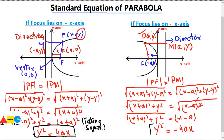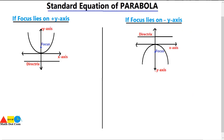This is the standard form of the equation of parabola when the focus lies on the negative x-axis and the vertex is (0, 0). So these are the two equations depending on the location of the focus on the x-axis. Now we move towards the cases where the focus lies on the positive y-axis and the negative y-axis. Keep in mind that in all these cases the vertex will be (0, 0) at the origin.